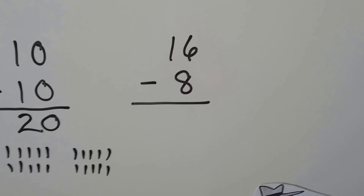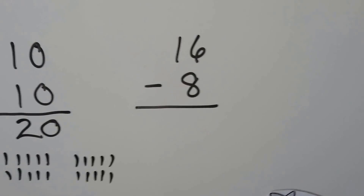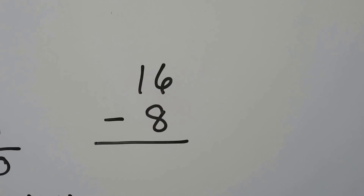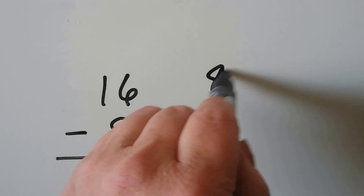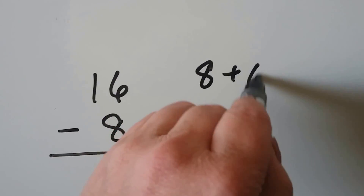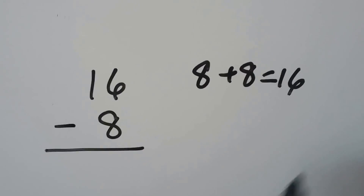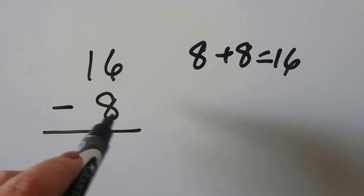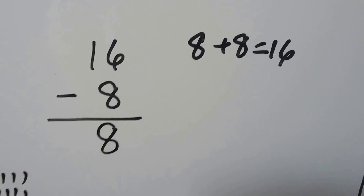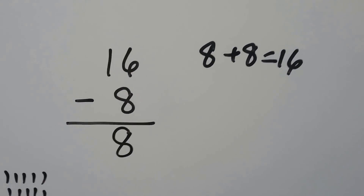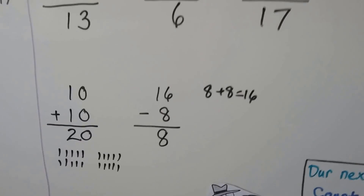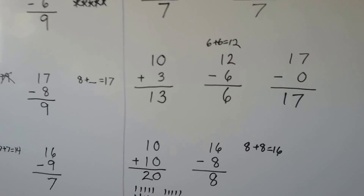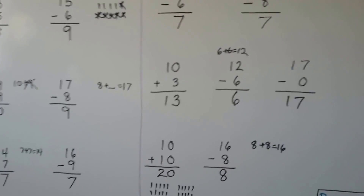16 minus 8. We can use a related doubles addition sentence. If we know 8 plus 8 is equal to 16, then we know 16 minus 8 is equal to 8. Just use the strategy that you like to use the most.